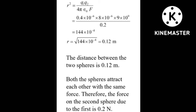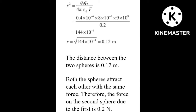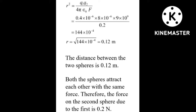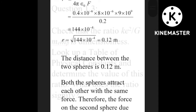Taking the square root: r = √(144×10⁻⁴) = 0.12 meters. So the distance between the spheres is 0.12 m. For part (b), since both spheres attract each other with the same force by Newton's third law, the force on the second sphere due to the first is also 0.2 newton.